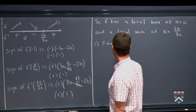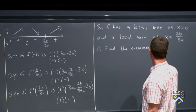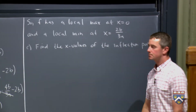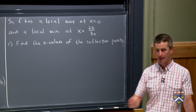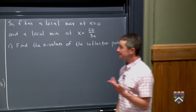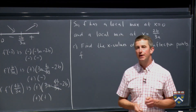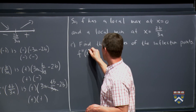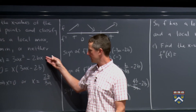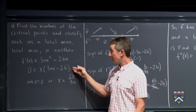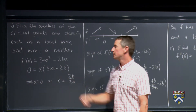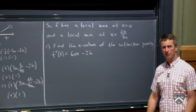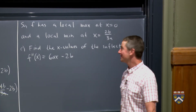Next, let's find the x-values of the inflection points, where f changes concavity. The sign of the second derivative tells us whether f is concave up or concave down. Computing f''(x) by differentiating f'(x) = 3ax² − 2bx: the derivative of 3ax² is 6ax, and the derivative of 2bx is 2b, giving f''(x) = 6ax − 2b. This is a line, so it's never undefined. We can factor out a 2: f''(x) = 2(3ax − b). Setting this equal to zero, since 2 ≠ 0, we need 3ax − b = 0, giving x = b over 3a.